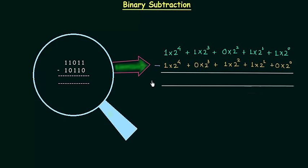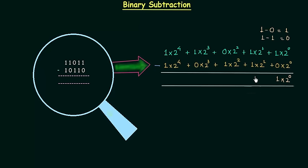We will start subtracting the bits from right. So 1 minus 0 will give us 1. We have 1 multiplied by 2 raised to power 0, because 2 raised to power 0 is the weight of this position. Then 1 minus 1 is equal to 0, so we have 0 multiplied by 2 raised to power 1.